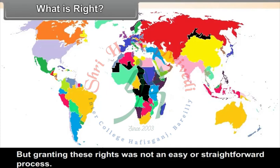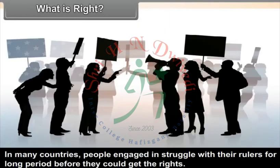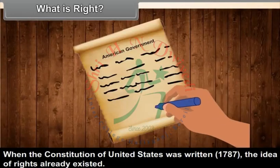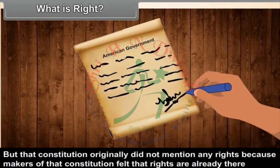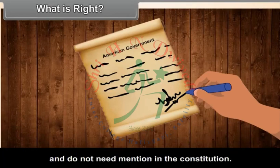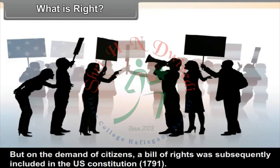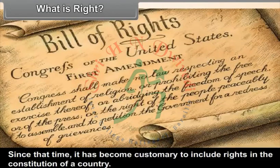Granting these rights was not an easy or straightforward process. In many countries, people engaged in struggles with their rulers for long periods before they could get their rights. When the Constitution of the United States was written in 1787, the idea of rights existed, but that Constitution originally did not mention any rights. On the demands of citizens, a Bill of Rights was subsequently included in the U.S. Constitution in 1791. Since that time, it has become customary to include rights in the Constitution of a country.